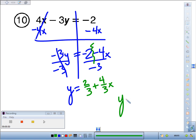Putting your variables first, we've got y equals 4 thirds x, and a positive 2 thirds at the end.